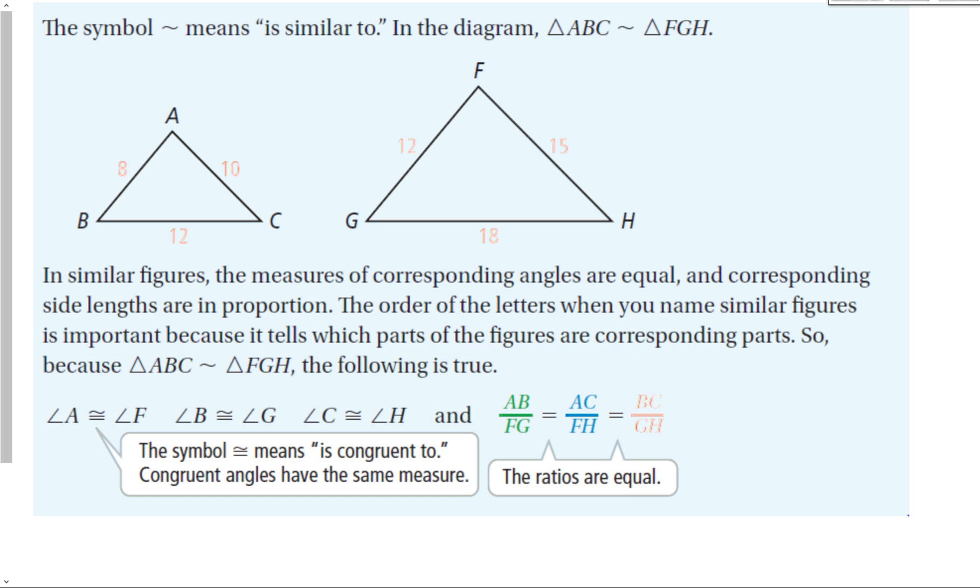The order of the letters when you name similar figures is important because it tells you which parts of the figures are corresponding parts. Because triangle ABC is similar to triangle FGH, the following is true: angle A is congruent to F, B is congruent to G, and C is congruent to H.